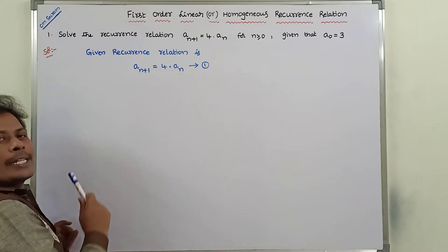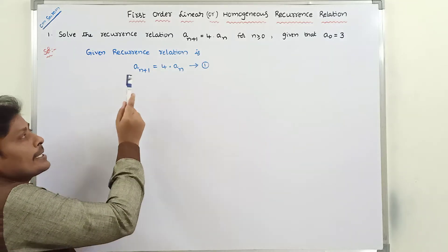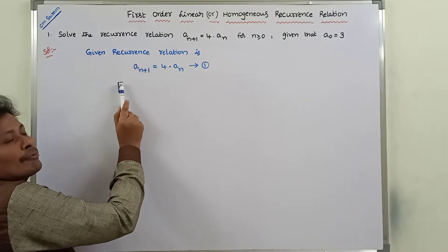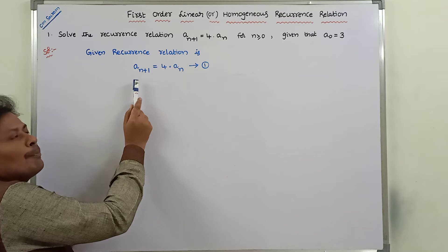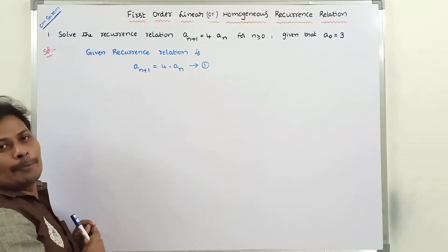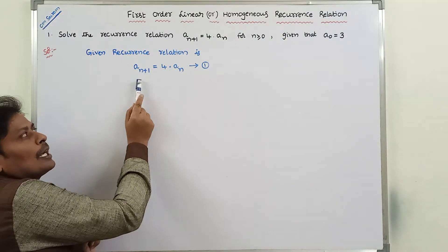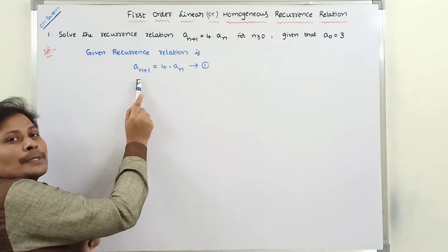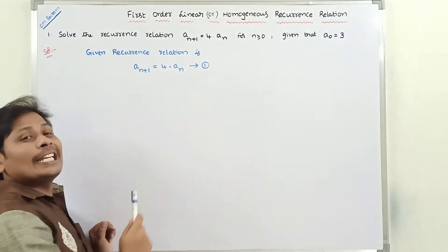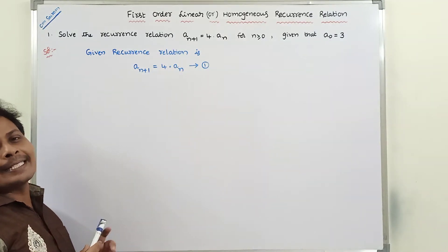By observing this recurrence relation, what is the order? It is a first-order recurrence relation because here the (n+1)th term is defined in terms of only one previous term, that is a(n). So the (n+1)th term depends only on the nth term, with one initial condition. Therefore it is called a first-order linear recurrence relation.